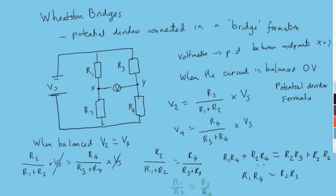R4. So R1 over R2 will equal R3 over R4 when the Wheatstone bridge is balanced. When it's not balanced, this will not be the case.